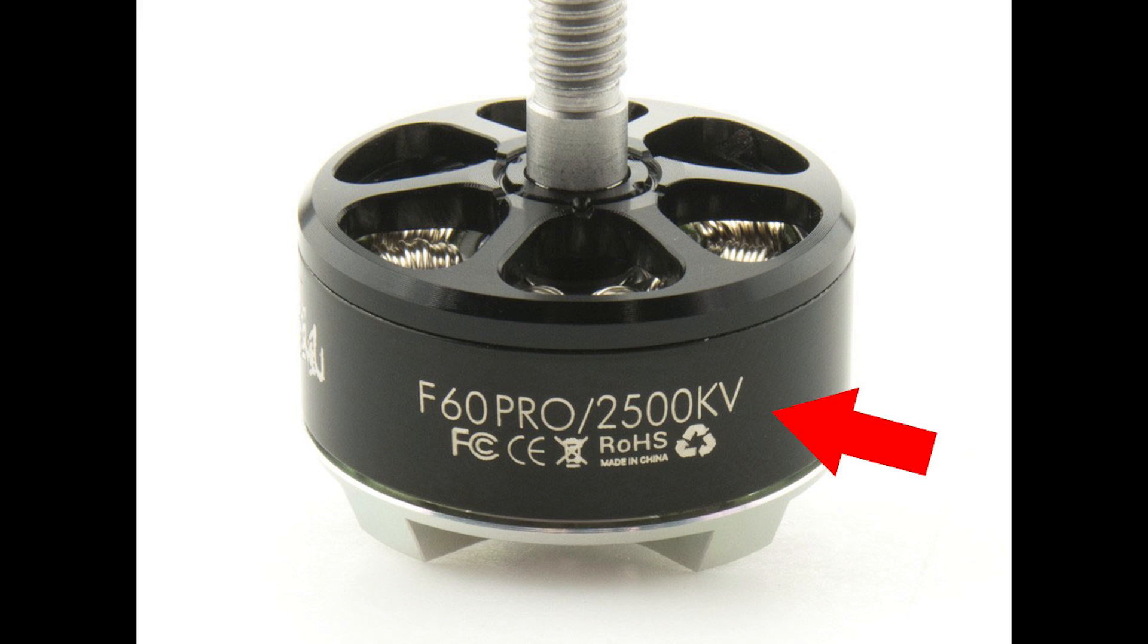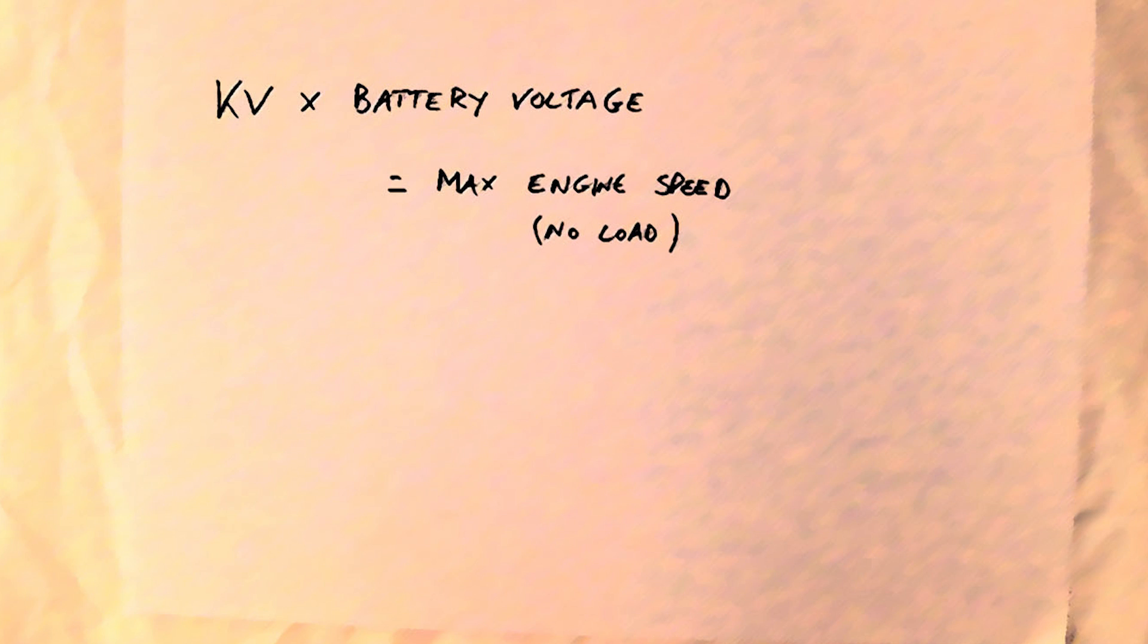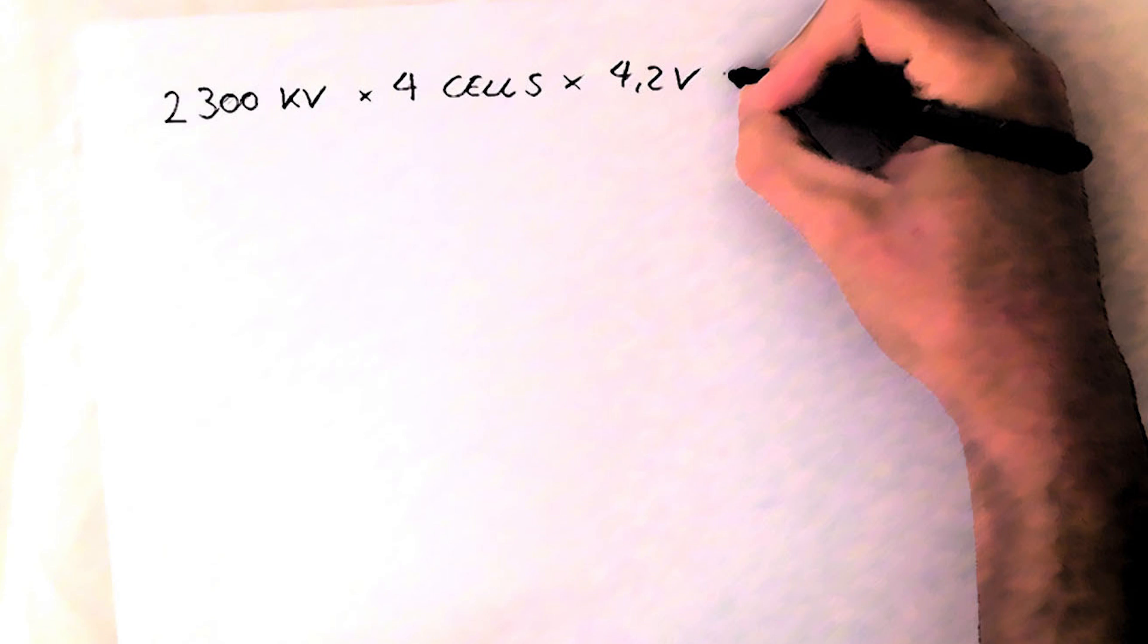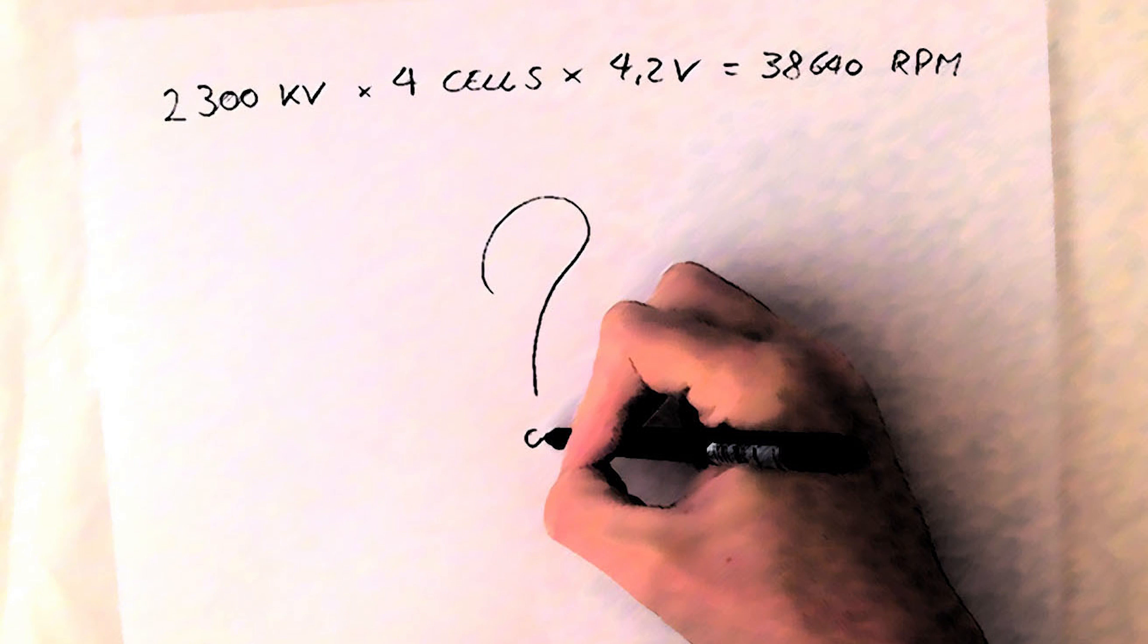In this video we'll go a bit deeper into what the KV really is. KV is also known as the voltage constant. You might already know that if you multiply this by the battery voltage you get the maximum theoretical speed of your motor. But why is that and how can we change it?